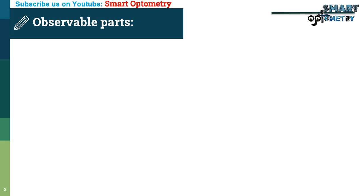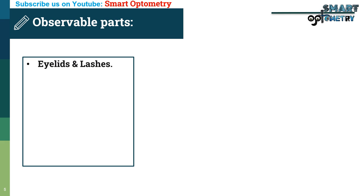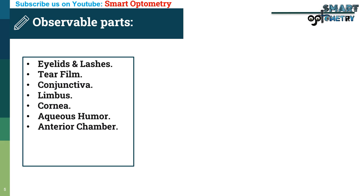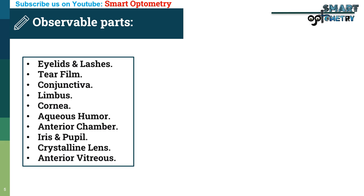Observable Parts: The parts of the eye that can be examined using a slit lamp include eyelids and lashes, tear film, conjunctiva, limbus, cornea, aqueous humor, anterior chamber, iris and pupil, crystalline lens, and anterior vitreous.